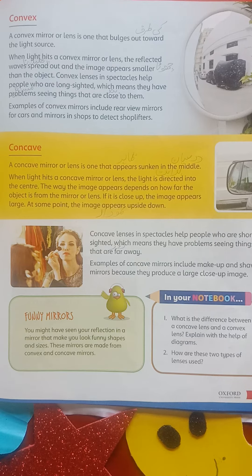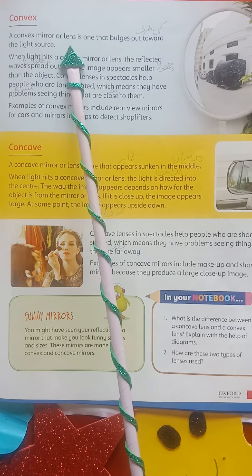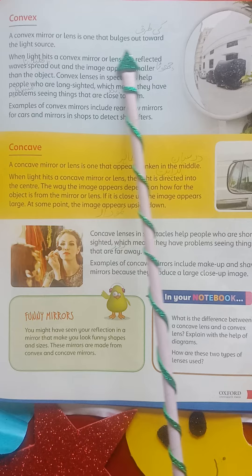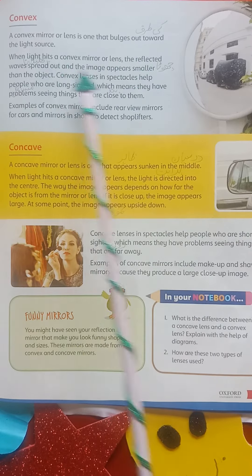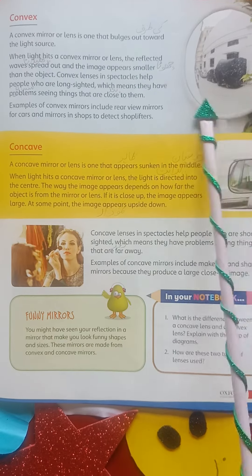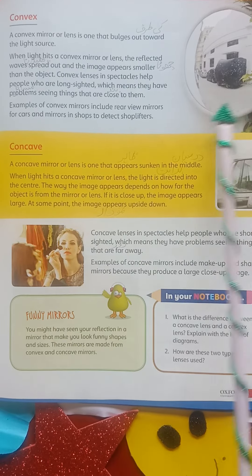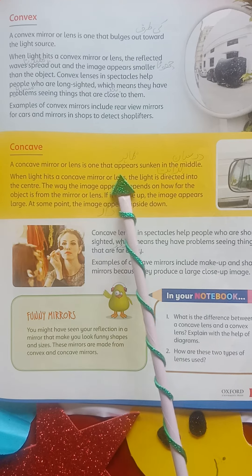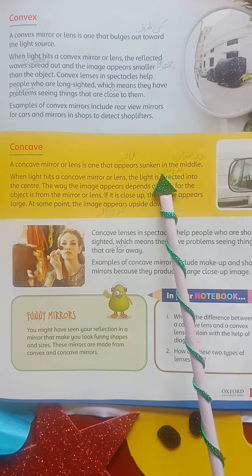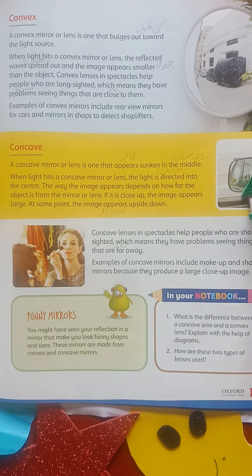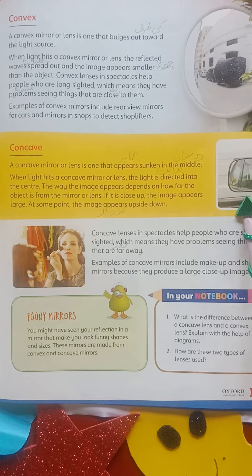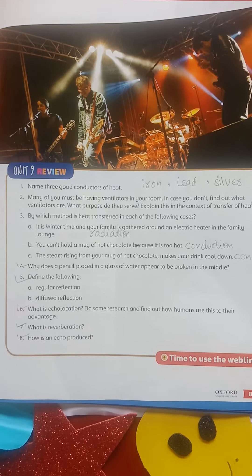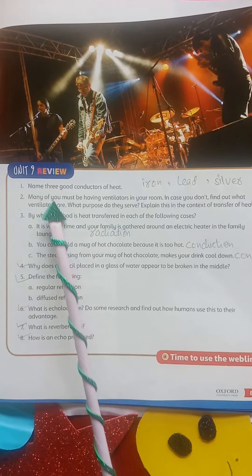Next: convex and concave mirrors. A convex mirror is a lens that builds out toward the light source — for example, side mirrors of a car. A concave mirror is a lens that appears sunken in the middle — for example, a car's rear mirror. Here is the book work of Unit Number 9.